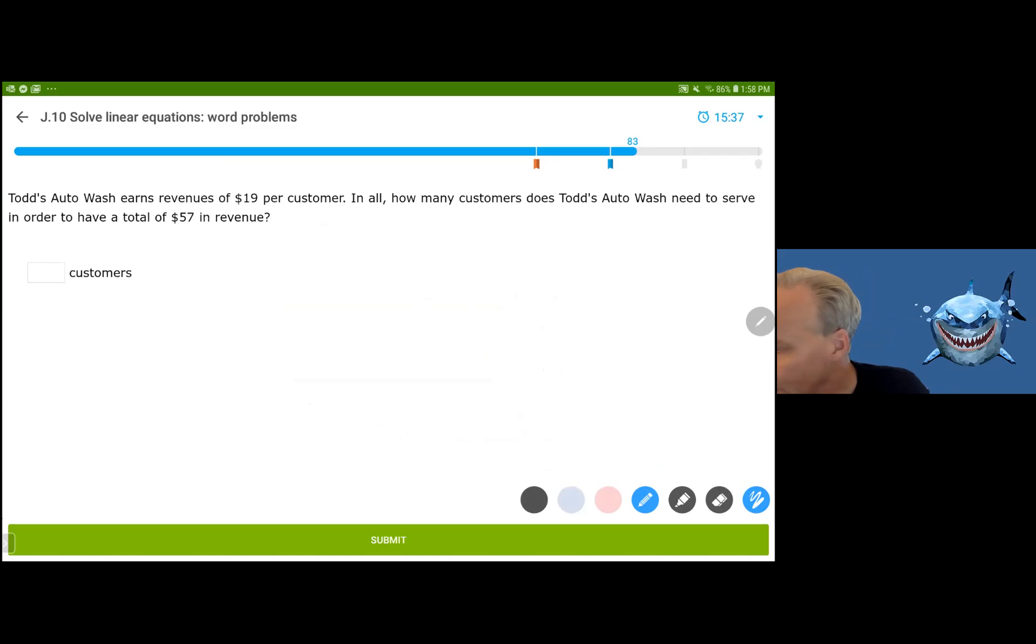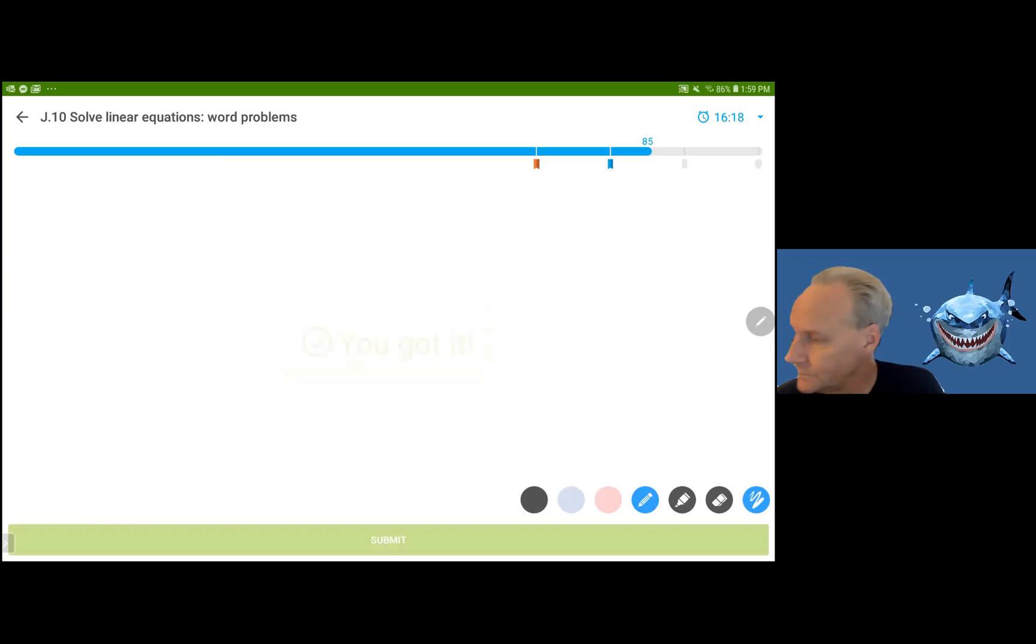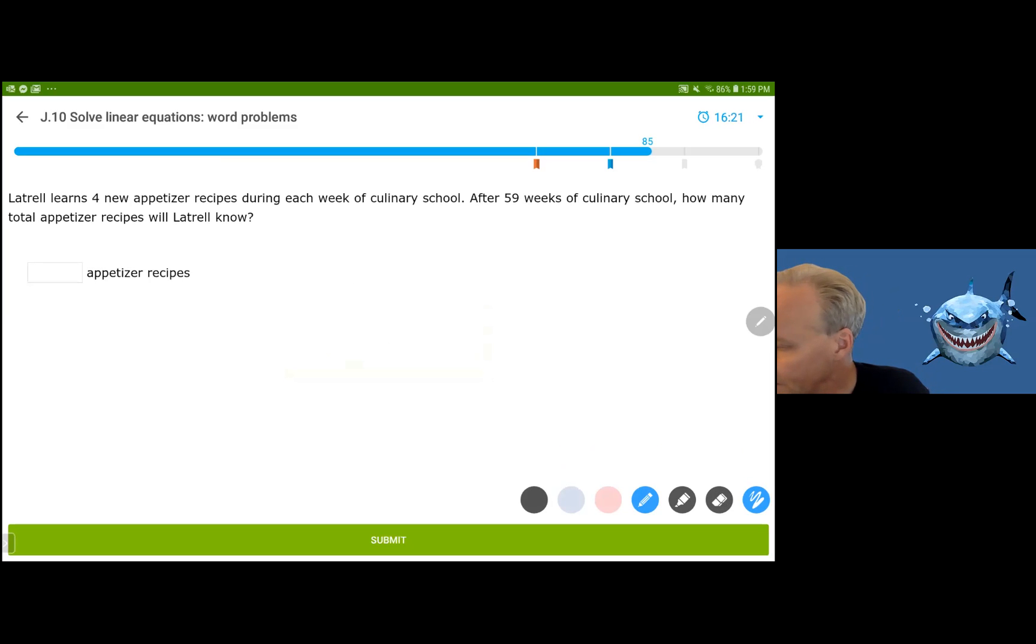Todd's auto wash earns revenue of 19 per customer. In all, how many customers does he need to have $57 in revenue? He's going to divide. Of course, this is the revenue based on the number of customers. So revenue depends on the number of customers. Each customer brings in $19. That's called the rate of change. And we want it to be equal to 57. So we divide by 19 on both sides and C is equal to three. So if he has three customers, he'll have $57 in revenue.